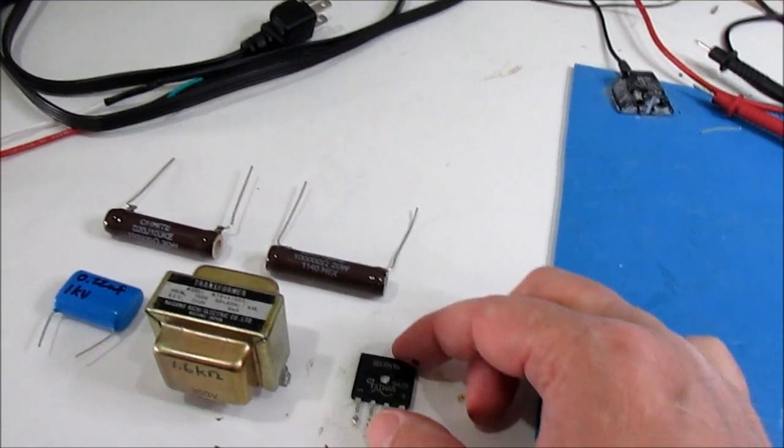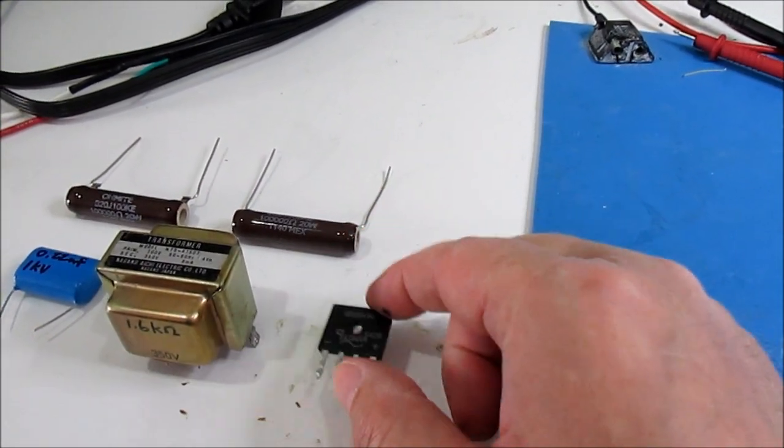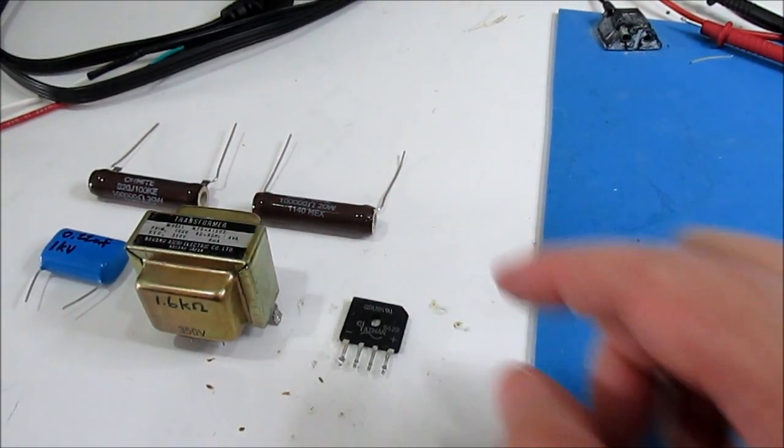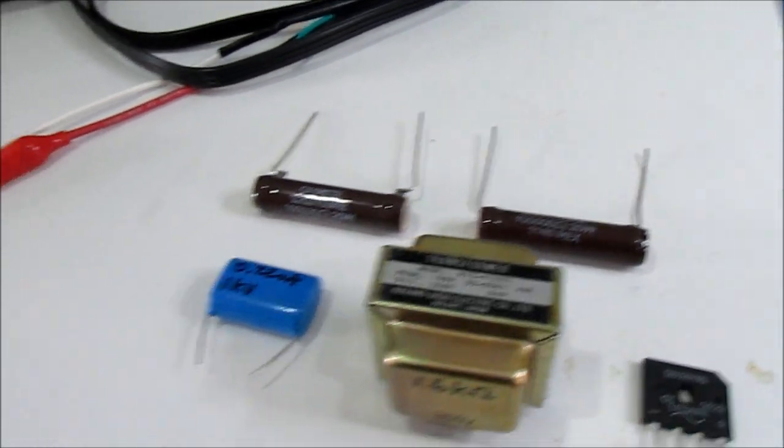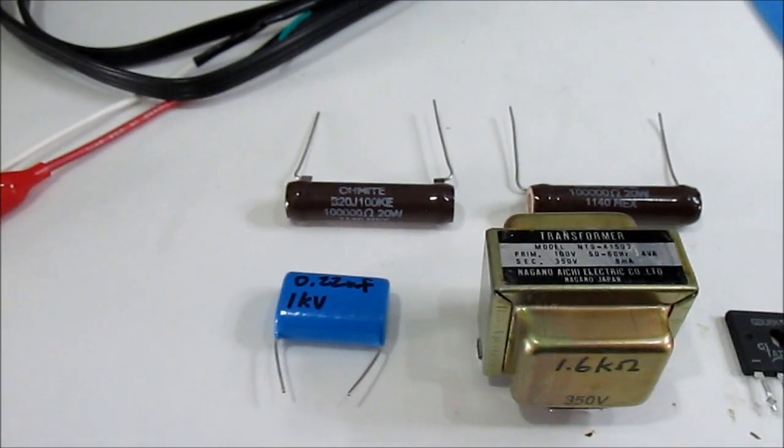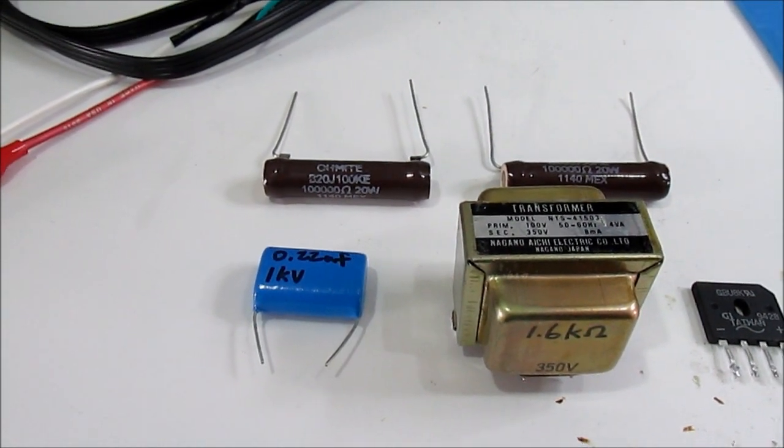Then I have this 800 volt rated bridge rectifier IC and I got a couple of 100k ohm power resistors and then I've got this 0.22 microfarad filter cap.